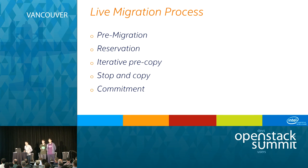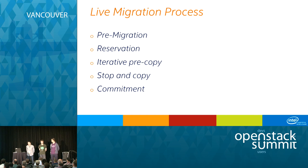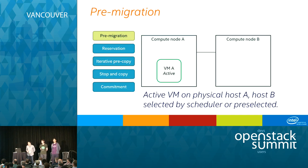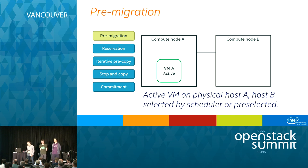The live migration process basically consists of five stages. The first stage — pre-migration — belongs to OpenStack. The second stage — reservation — belongs to both OpenStack and the hypervisor. Every subsequent step belongs to the hypervisor. At the very beginning we have two compute nodes A and B, and a virtual machine running on compute node A. In the pre-migration stage, we choose to which host our VM will be live migrated — either explicitly or by letting the scheduler do it for us.